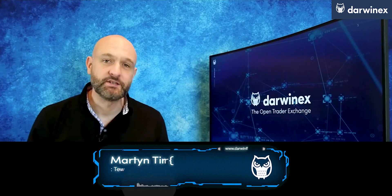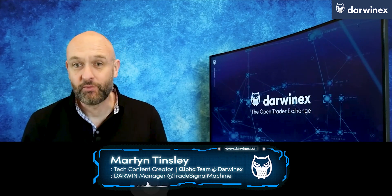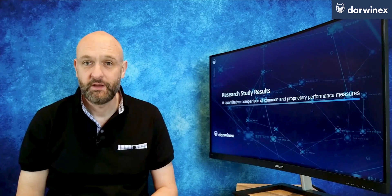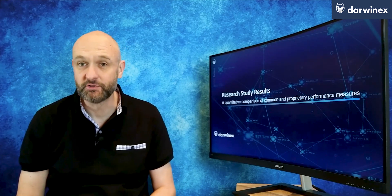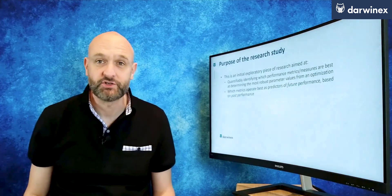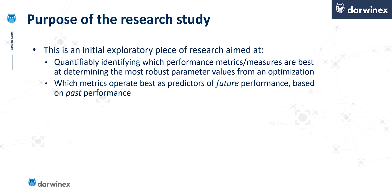I'm not really sure why I've never undertaken the research necessary to quantifiably determine which performance metric works best before now, but I have done just that. In this episode and the next, I'm going to present those findings. It will need two episodes simply because of the amount of results obtained. The primary aim of the research was to help identify which metric or metrics performed best at identifying the most robust parameters in an optimization — in other words, identifying the metrics that operate as the best predictors of future performance based on past performance.